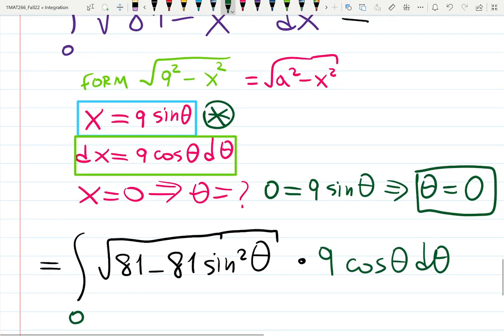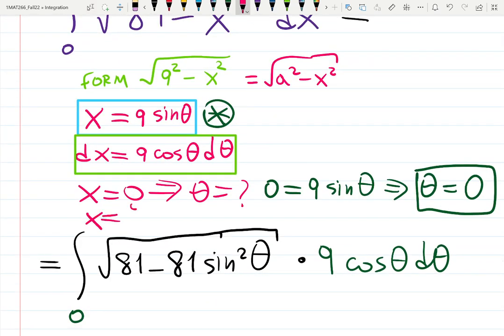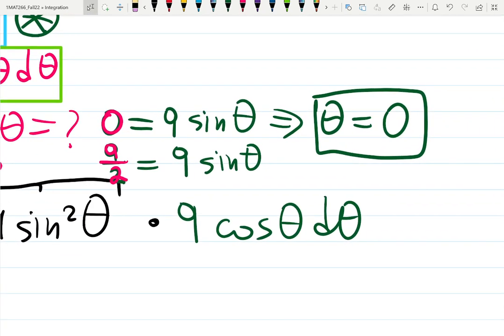How about the other one? x = 9/2. Then 9/2 = 9 sin θ. I'm just plugging it into the left-hand side.